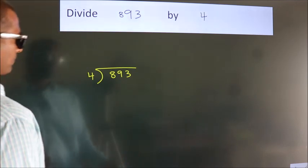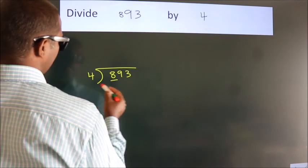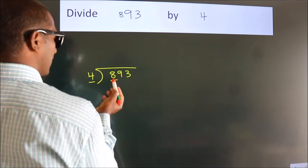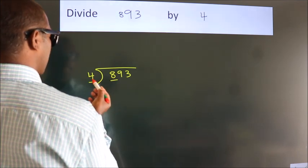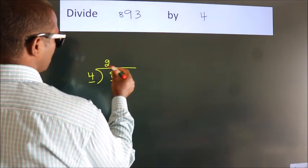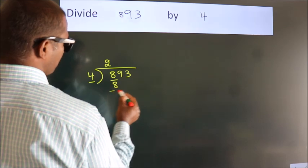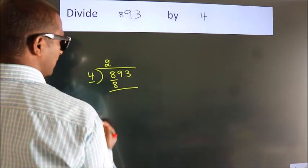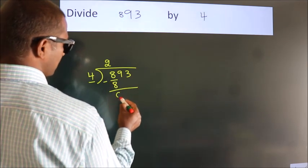Next, here we have 8, here 4. When do we get 8 in the 4 table? 4 twos, 8. Now, we subtract and get 0.